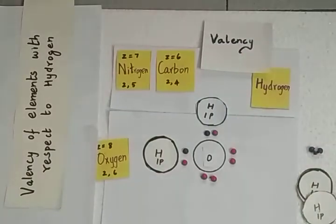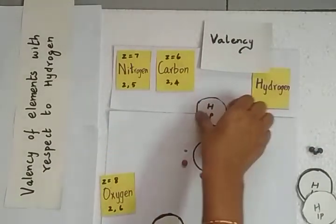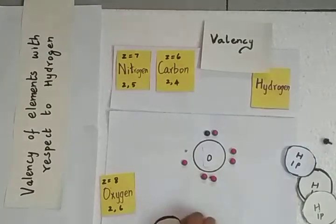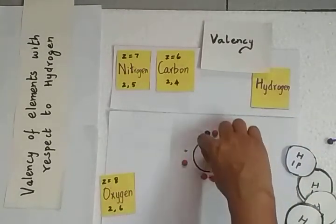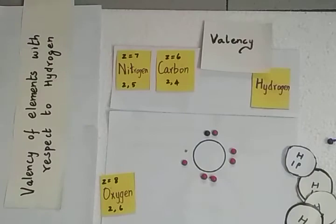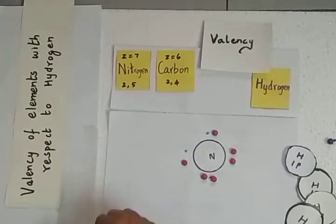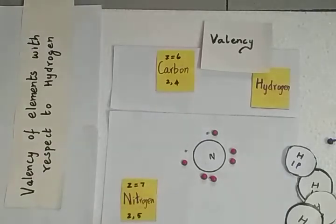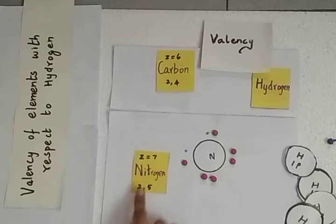Now let us consider the next example: nitrogen, with the symbol N. Nitrogen has an atomic number of 7 and an electronic configuration of 2,5 — that is 2 in the K shell and 5 in the valence shell, which is the L shell.